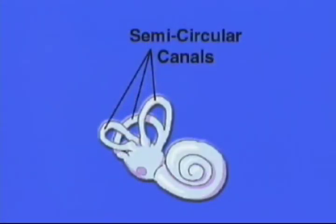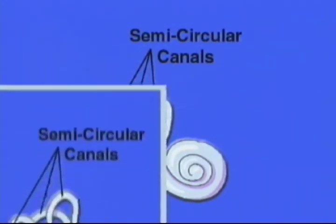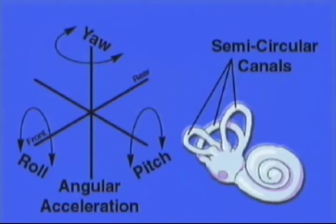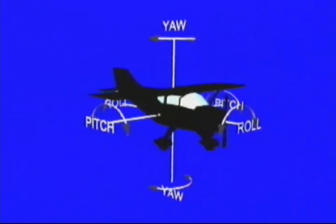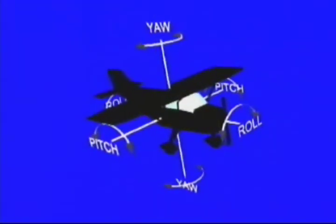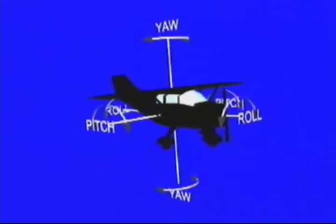Three half-circular interconnected tubes inside each ear comprise the semicircular canals. The semicircular canals of both inner ears monitor angular acceleration and sense rotation in three dimensions. The planes of the three canals in each ear correspond to the roll, pitch, or yaw motions of an aircraft.